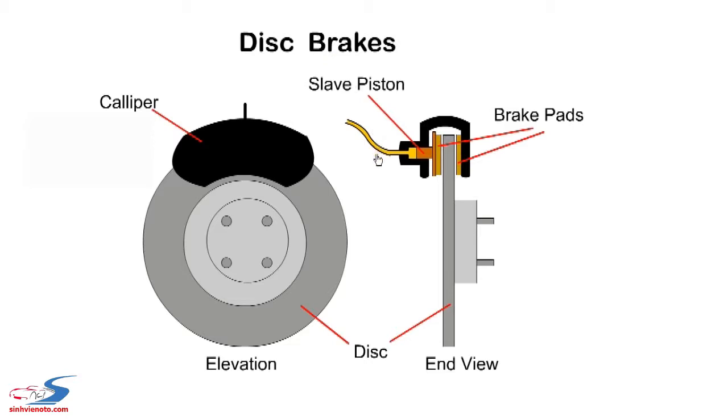We start with disc brakes. The disc or rotor is attached to the wheel and is surrounded by the brake caliper. The brake pads are located on both sides of the disc.